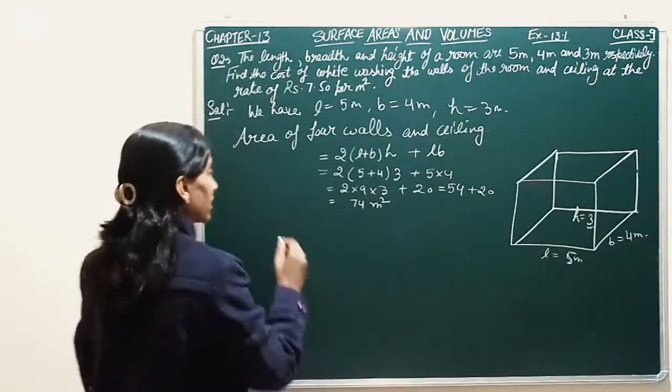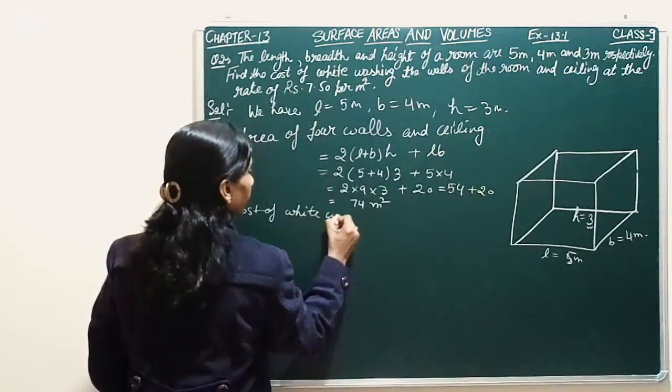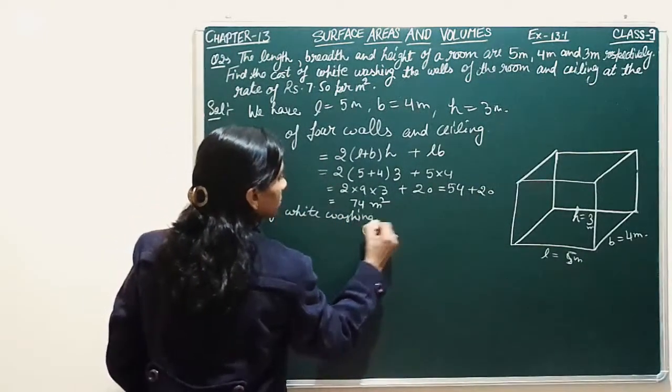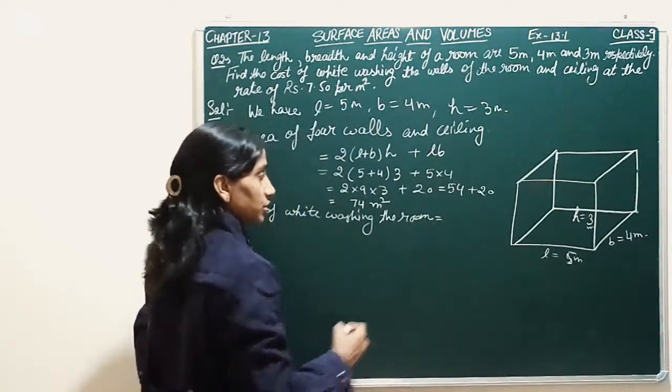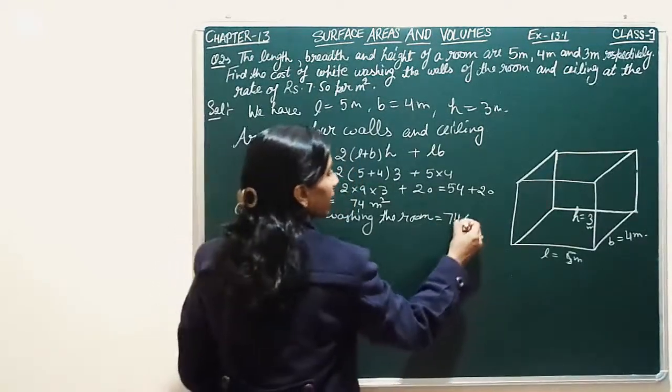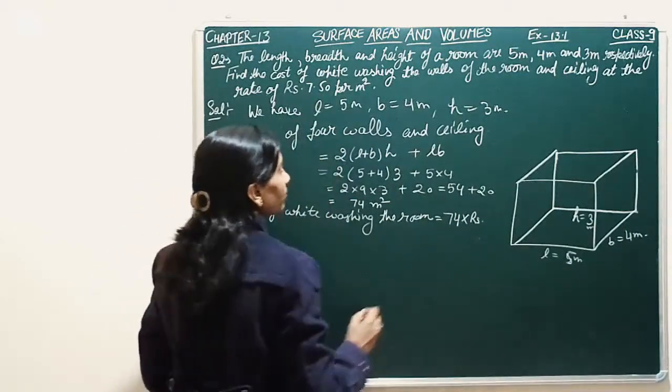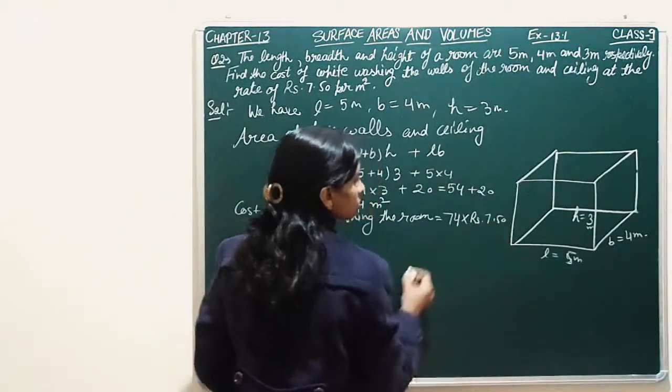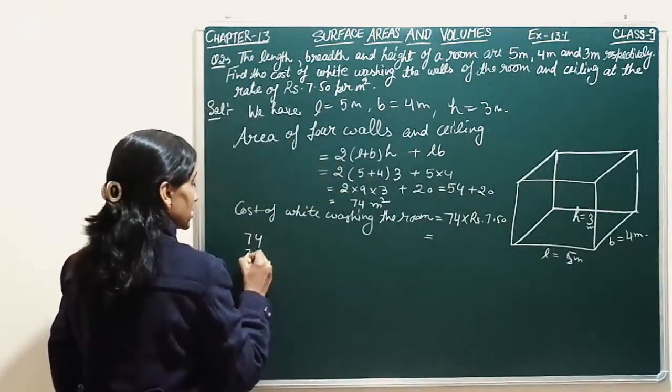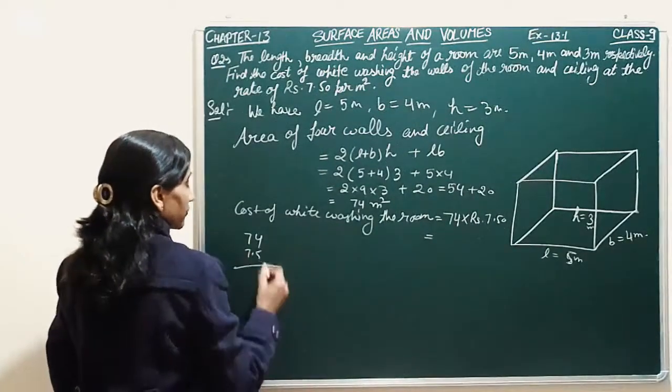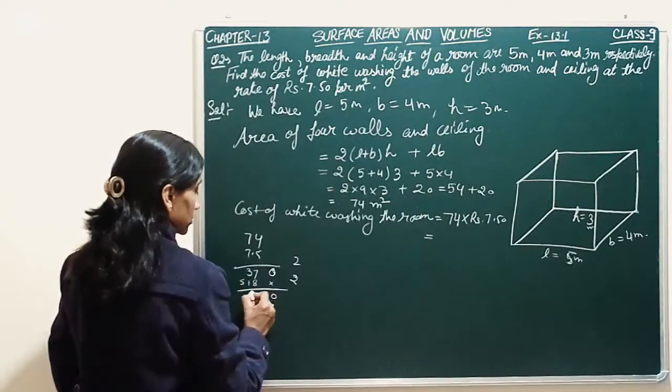We need to whitewash this area. Now, cost of whitewashing the room is equal to 74 meter square times Rs. 7.50 per meter square. So here we multiply this area. 74 times 7.50 equals Rs. 555.